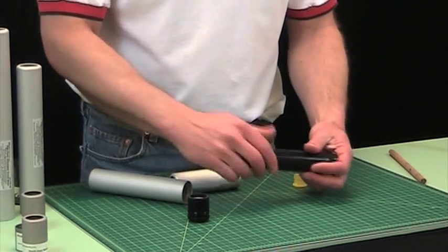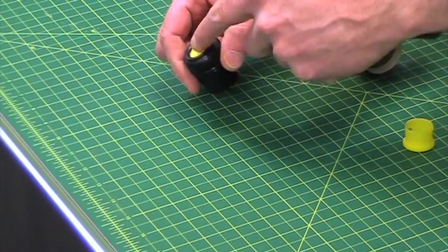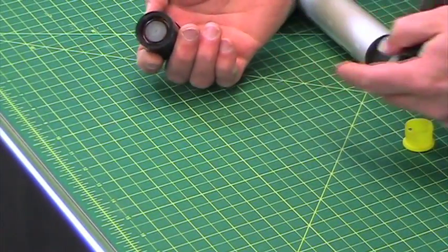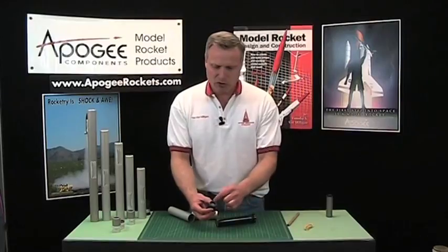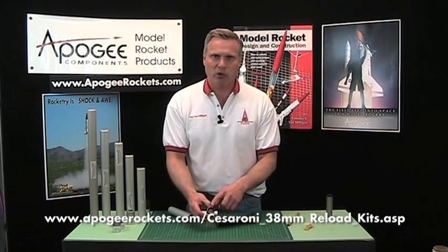And that goes on this end of the propellant case and this is the ejection charge is on this side and the delay grain is on this side and you'll need to adjust that delay grain. If you go to the propellant page for the Cesaroni propellant you'll see a video there on how to do that.